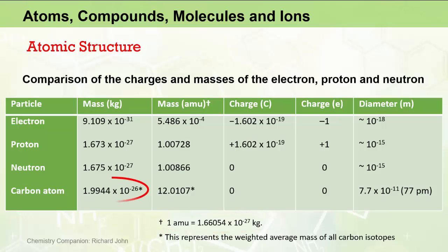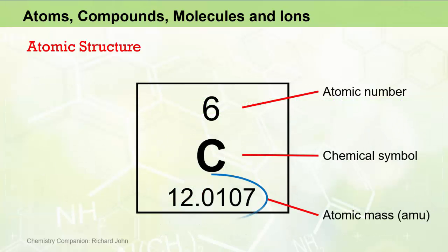The mass of an entire carbon atom in kilograms, including all of its protons, neutrons, and electrons, is approximately 1.99 by 10 to the minus 26 kilograms, which is equivalent to 12.0107 atomic mass units. And this number is the number that you will see under the symbol for carbon in the periodic table of the elements.